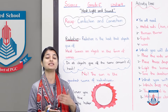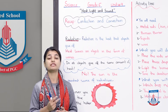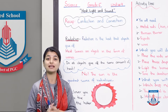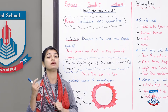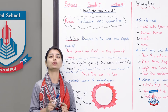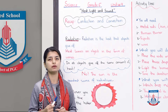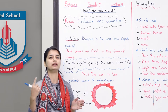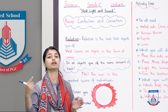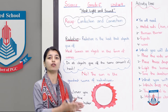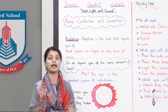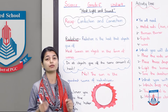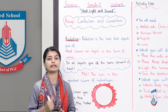In convection, molecules are in movement — they move around and pass on the heat to other molecules. Other molecules come into their place and they also take in the heat or cooling and then they start moving around. So now that we know what convection and conduction are, it's time to look at what radiation is.